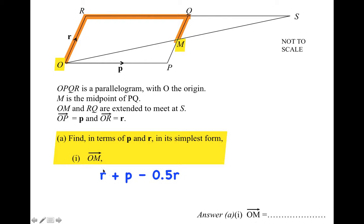So the vector from O to M, one way of getting there is R plus P minus half an R, and we can simplify that by gathering up the P's and R's. We've got a whole R here and minus half an R here, so together they make half an R. The answer is 0.5R plus P.